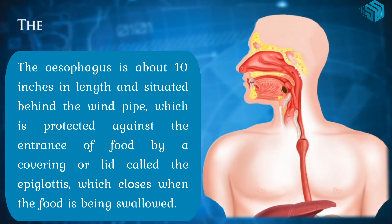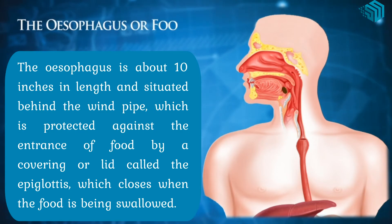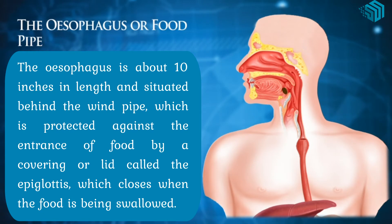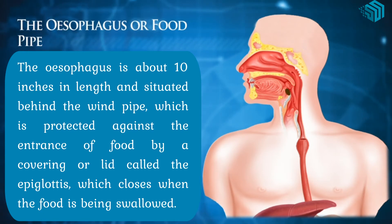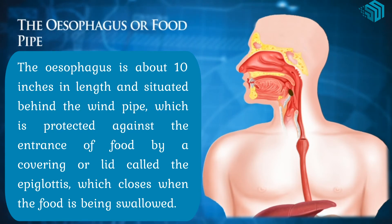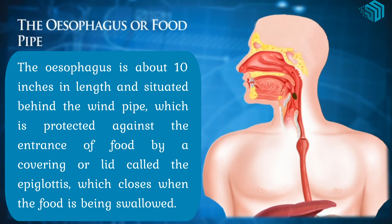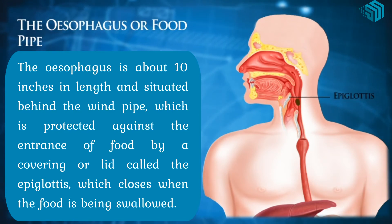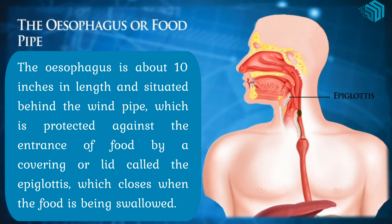The esophagus, or food pipe, is about ten inches in length and situated behind the windpipe, which is protected against the entrance of food by a covering or lid called the epiglottis, which closes when food is being swallowed.